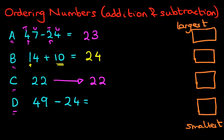And we've now got D. 49 minus 24. Again, let's start with the units. 9 minus 4 is 5.